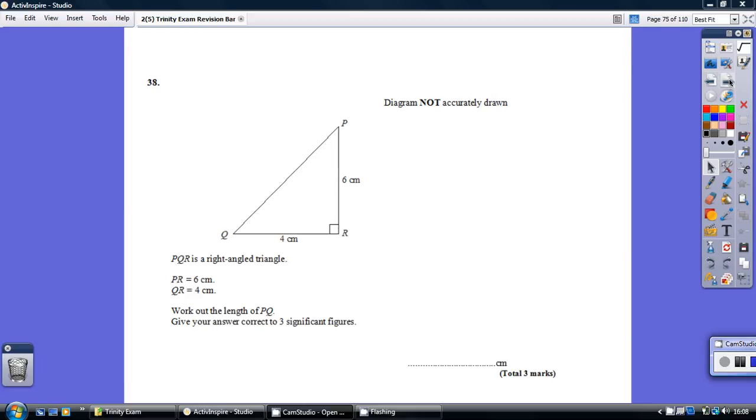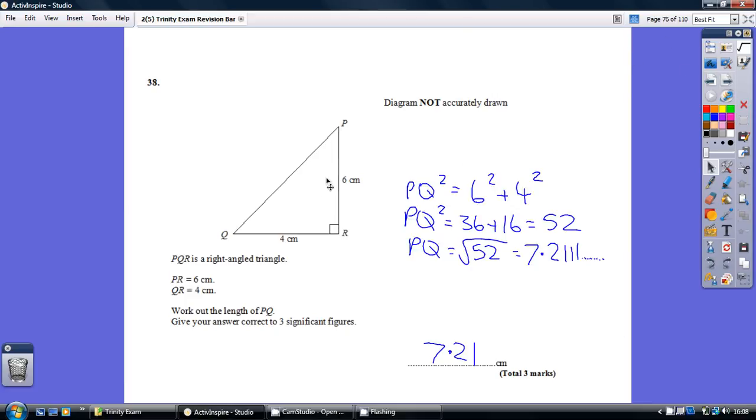Question 38, have a go. Okay, now this is different. Apart from there being a right angle, there's no information about the other angles. So this is not a SOHCAHTOA question, this is a Pythagoras question.